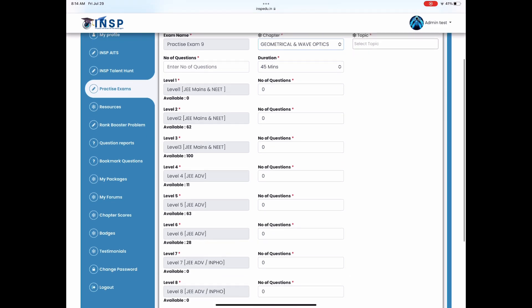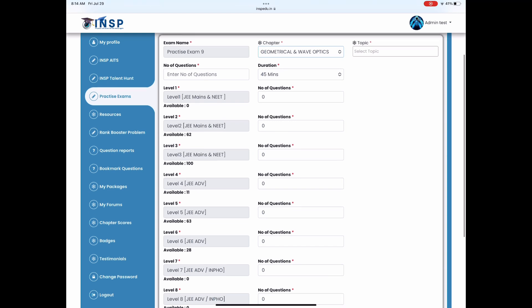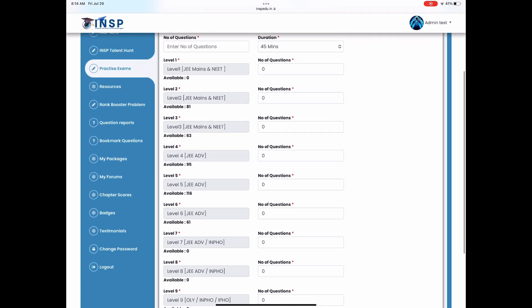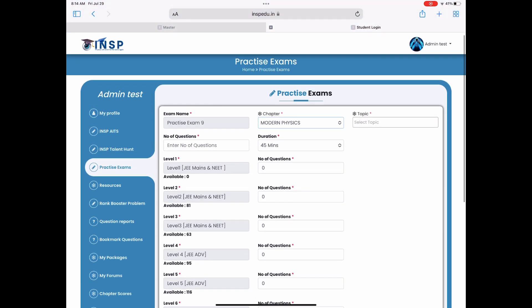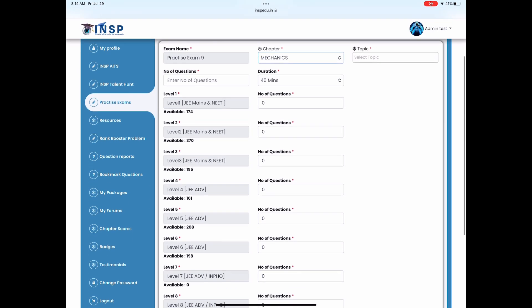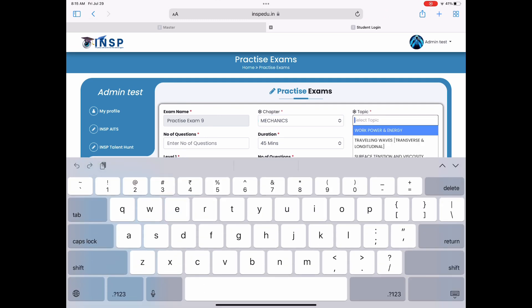Level 4, 5, 6 is for purely JEE Advanced and 1, 2, 3 is for JEE Mains and NEET. Level 3 is hybrid kind of thing where moderate mains and tough mains and moderate advance and tough NEET kind of problems are there.